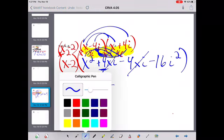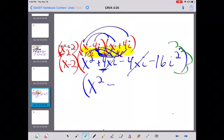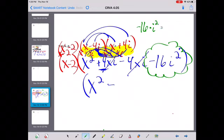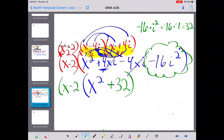And then here, folks, we need to think. Oops, I'm going to change the colors. In this region, we need to think, well, we have negative 16 times i squared. Which, remember, i squared is the same as negative 1. So, really, that whole bubble equals positive 32. So, we have x squared plus 32. That's negative multiplied with x minus 2.